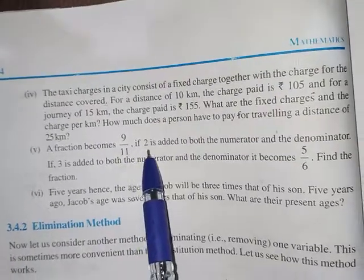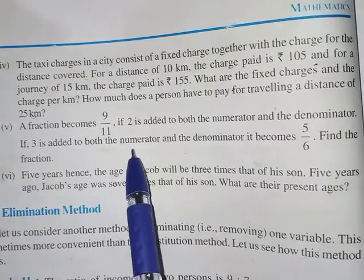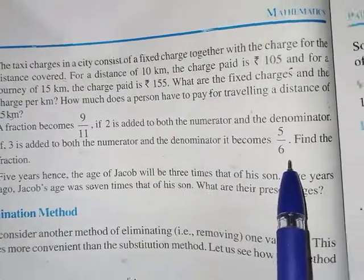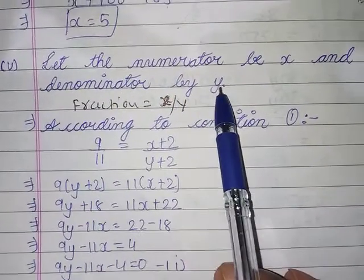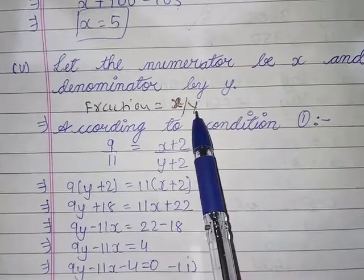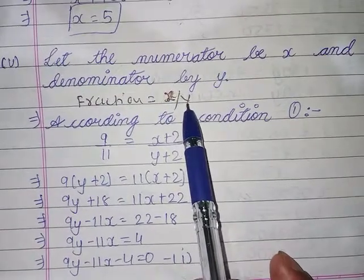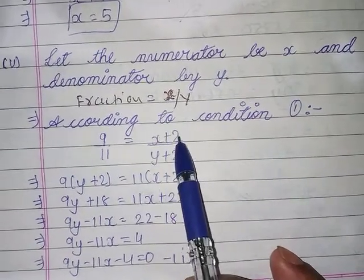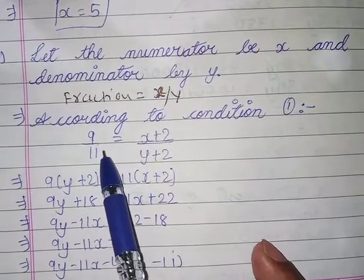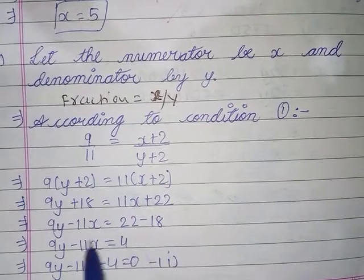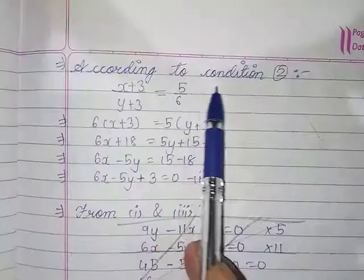Next problem: a fraction becomes 9 by 11 if 2 is added to both the numerator and the denominator. Let the numerator be X and the denominator be Y. So (X+2)/(Y+2) equals 9/11. Cross-multiplying gives 9Y minus 11X minus 4 equals 0.